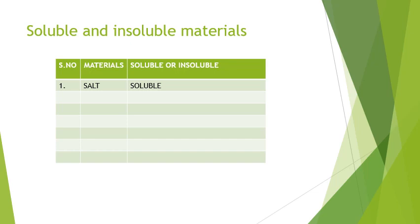For example, make a table with columns: serial number, materials, and soluble or insoluble. Here I am taking salt. Write serial number 1, and below that, under material, write salt. Then check whether that salt is soluble or insoluble. Do these activities at your home, then keep them ready for assessment.